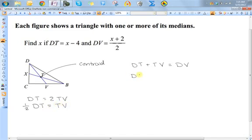So what I can do is I can say DT plus one-half of DT is equal to DV. So now, I have DT and DV only, and I have expressions for those, so I can go ahead and plug those in. So I know that DT is x minus 4 plus one-half of x minus 4 equals x plus 2 over 2.